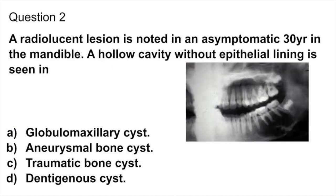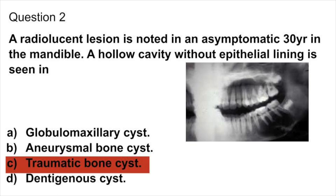Question 2. A radiolucent lesion is noted in an asymptomatic 30-year-old in the mandible. A hollow cavity without epithelial lining is seen in: globulomaxillary cyst, aneurysmal bone cyst, traumatic bone cyst, or dentigerous cyst? Answer: traumatic bone cyst.